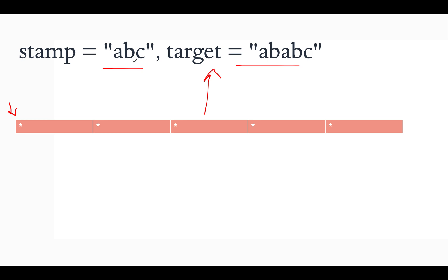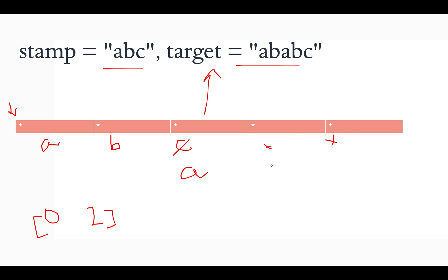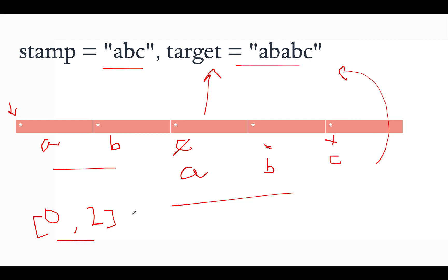Let's try an example: stamp is 'abc' and target is 'ababc'. The first thing we can do is stamp at the zeroth index, replacing with 'abc', giving us 'abc**'. In the second operation, we stamp at the second index, which overrides and gives us 'ababc'. This matches the target string, so the answer is: stamp at zeroth and second index.